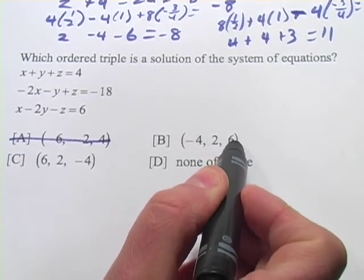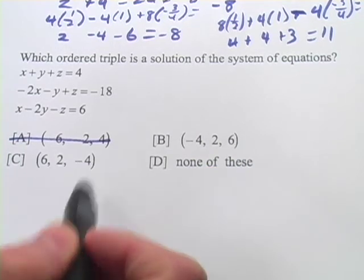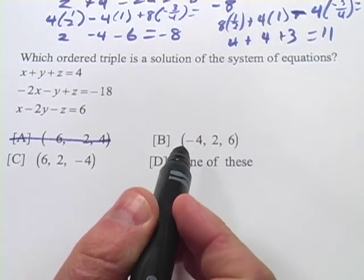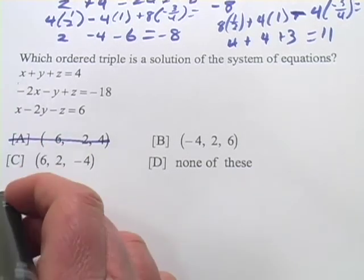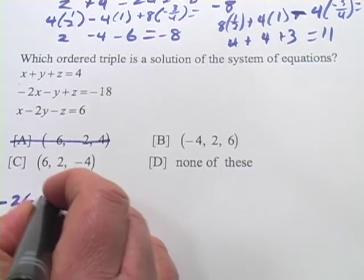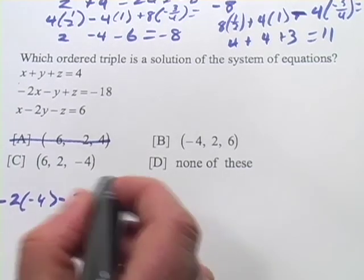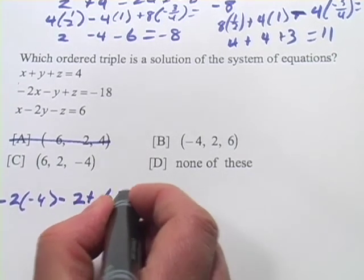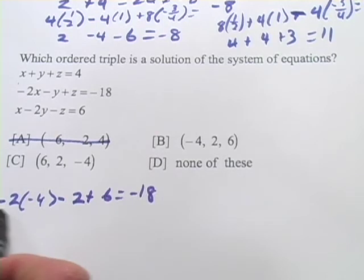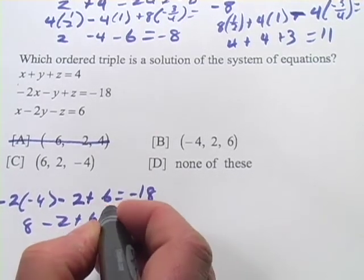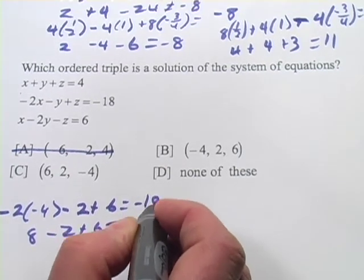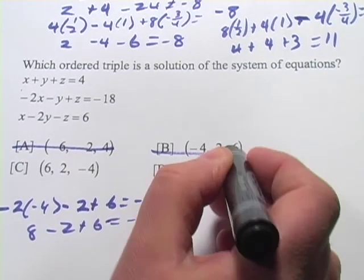B, negative 4, 2, and 6, that works. And 6, 2, and negative 4, that works. So let's try B, see if it gets us anywhere. We know it satisfies the first equation. Let's try it with the second one. So negative 2 times a negative 4 minus 2 plus 6 equals negative 18. So negative 2 times a negative 4 is positive 8 minus 2 plus 6, and that does not equal negative 18. So we've already eliminated A and B.